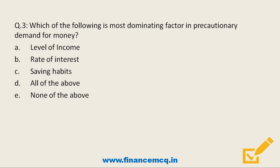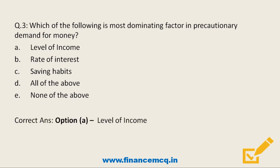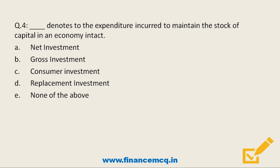Moving on: Which of the following is the most dominating factor in precautionary demand for money? Option A: Level of income, Option B: Rate of interest, Option C: Saving habits, Option D: All of the above, Option E: None of the above. Remember that speculative demand for money is dominated by rate of interest, but level of income is the most dominating factor for precautionary demand for money. So the correct answer is Option A — level of income.